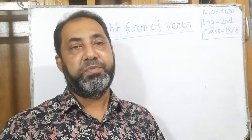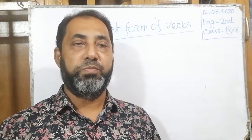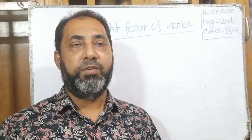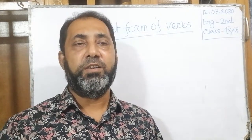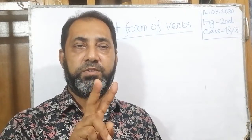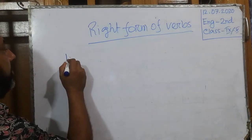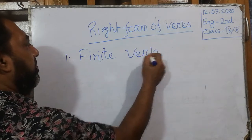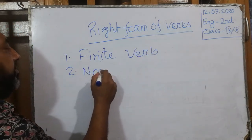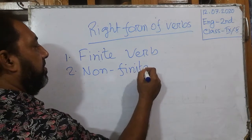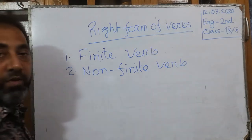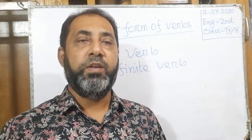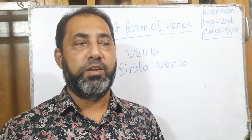Right form of verbs. Before that, you should know how many kinds of verbs there are in English. In English, there are two classes of verbs — one is finite verb and the other is non-finite verb. These finite verbs and non-finite verbs are used in filling gaps.